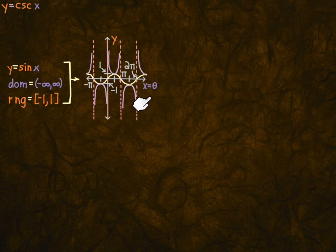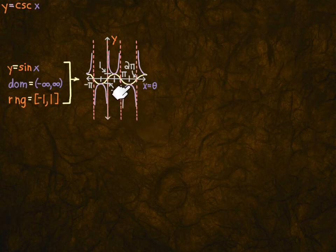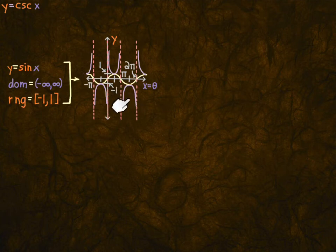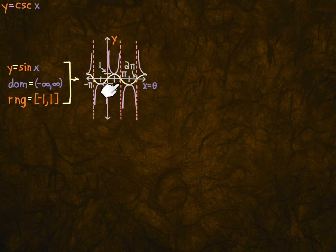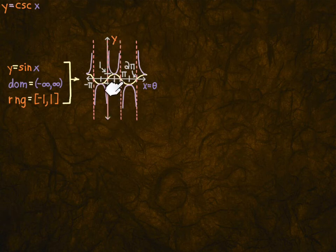If you do graph these on the calculator — which is not a bad idea to get a feel for what they look like — first make sure your mode is set to radians and not degrees, or it'll be all wrong. After you graph it, click the Zoom button, scroll down to 'ZTrig' (zoom trig), and that will make each notch π/2 instead of 1. Then you can see the asymptotes fall right on one of those notches — it just changes the horizontal scale.